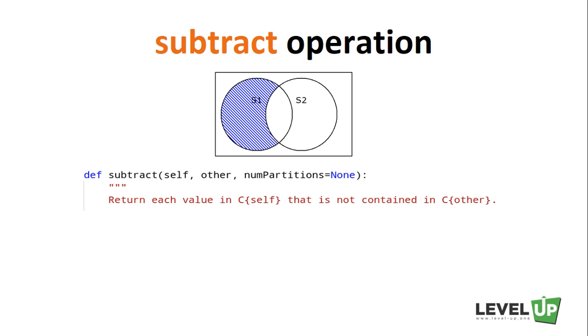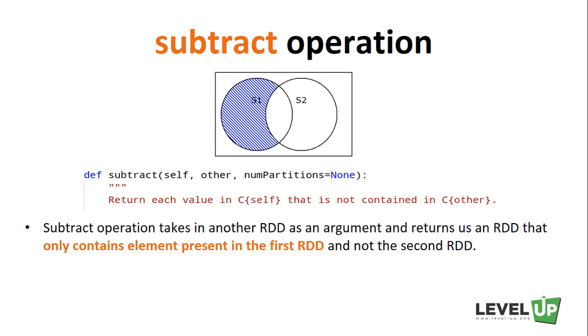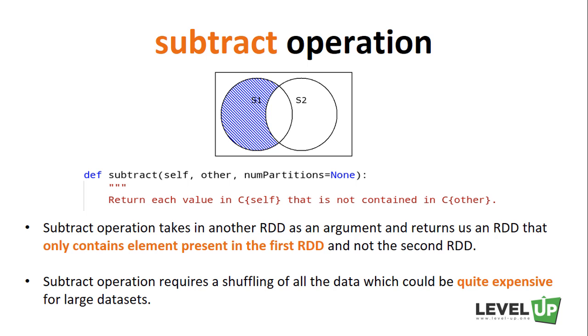The next one is Subtract. The Subtract function takes in another RDD as an argument and returns an RDD that only contains elements present in the first RDD and not the second RDD. This is useful if you want to remove some elements from an existing RDD. Similar to Intersection and Distinct operations, Subtract operation requires a shuffling of all the data which could be quite expensive for large datasets.